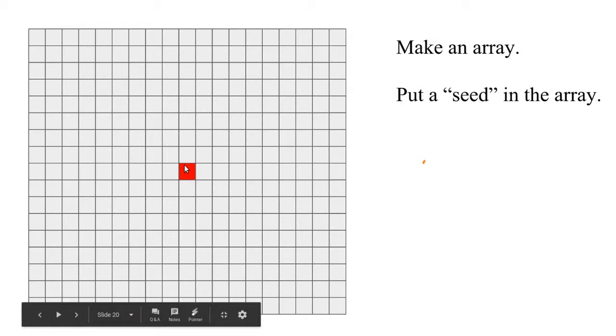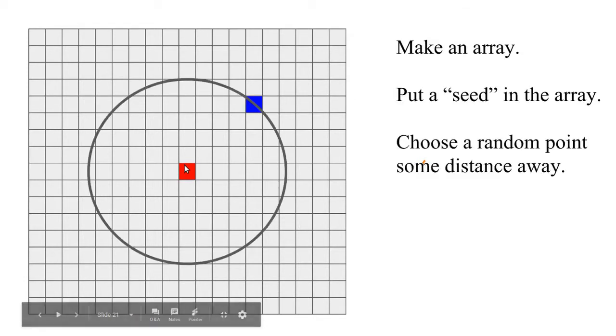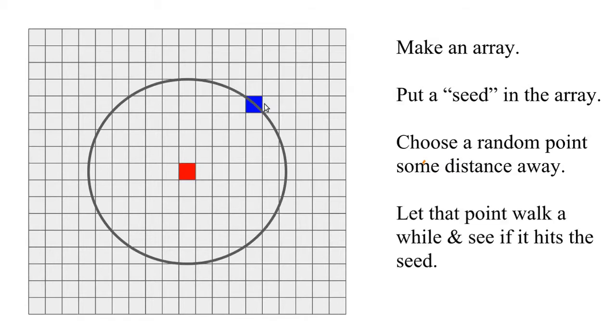So here's the process. We're going to make an array fairly big and put a seed in the center of the array. So you could imagine all of these locations are zero and the red is a one. Then we're going to pick another place some distance away and put a one there and then let that one take a random walk.